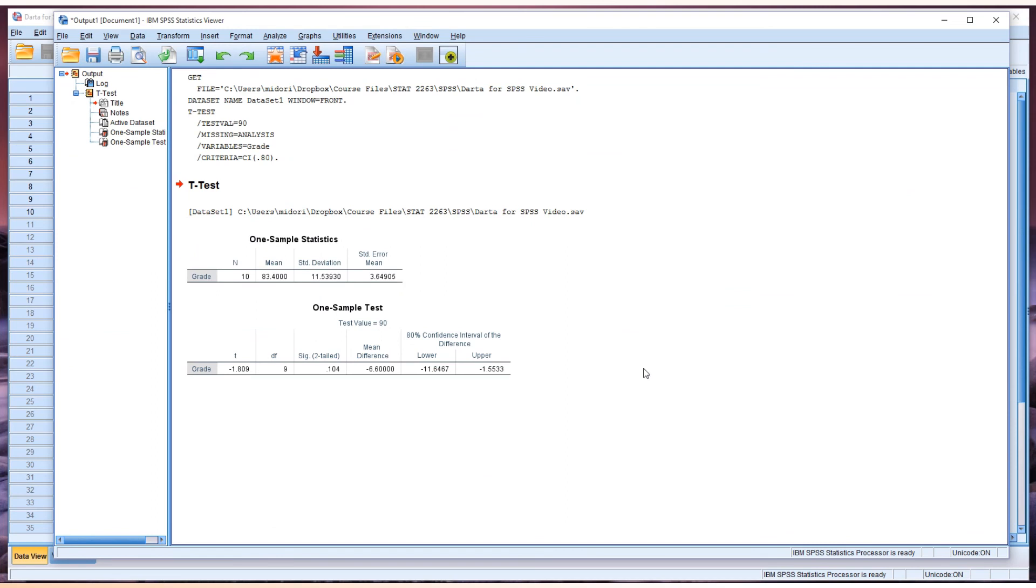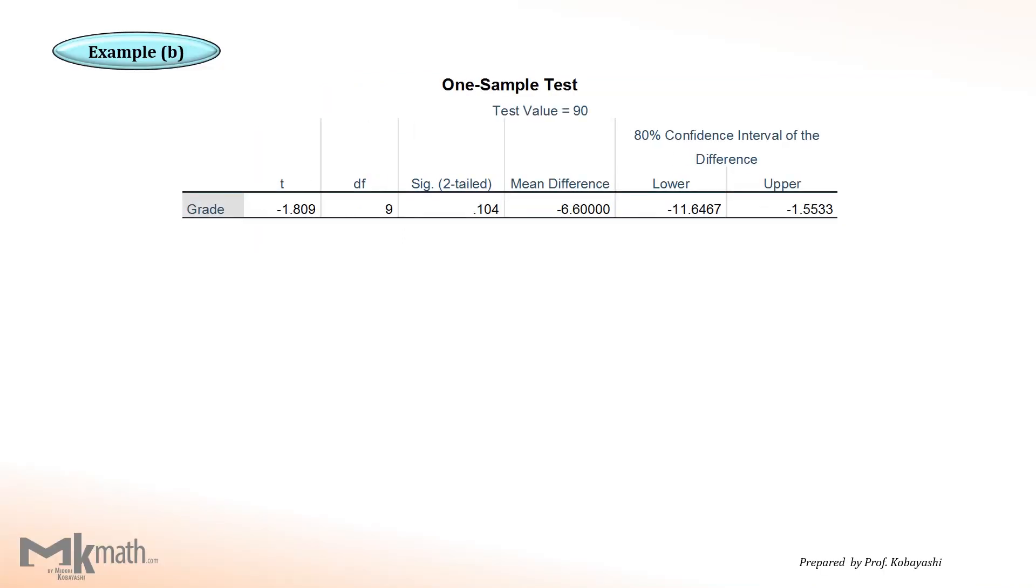Now we have a result. Now, this is the output table from SPSS. Same as before, saying two-tailed, that should be p-value for two-tailed tests. However, we are doing one-tailed test for this time. So therefore, we need to divide this value by 2 to get 0.052.